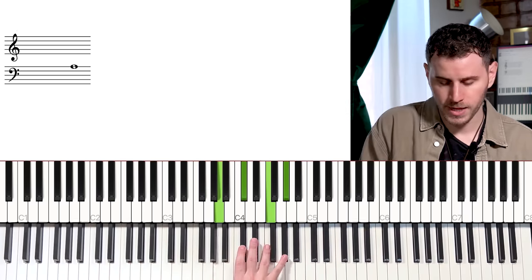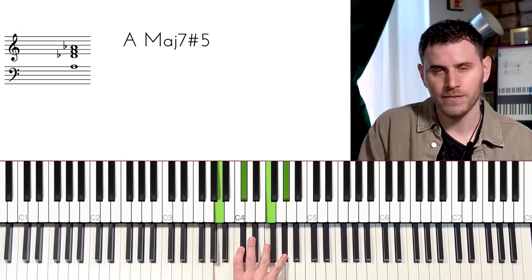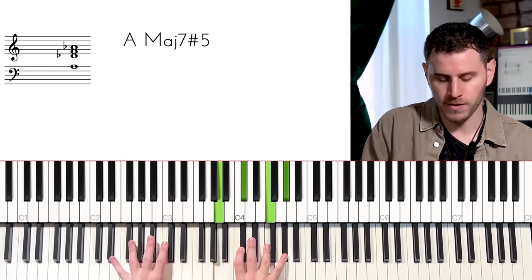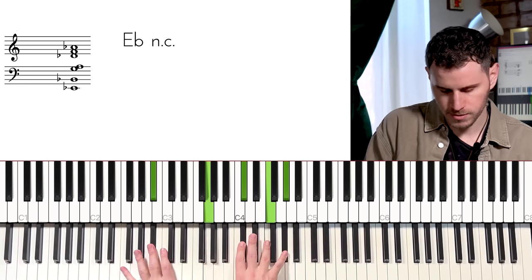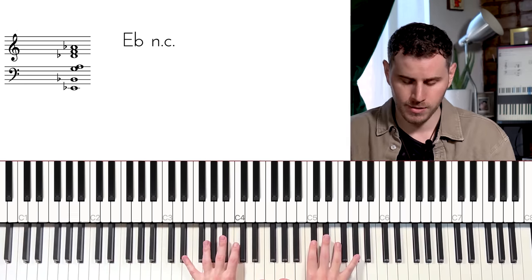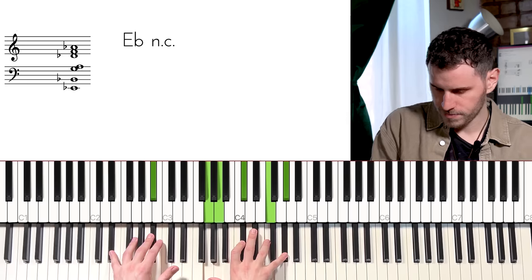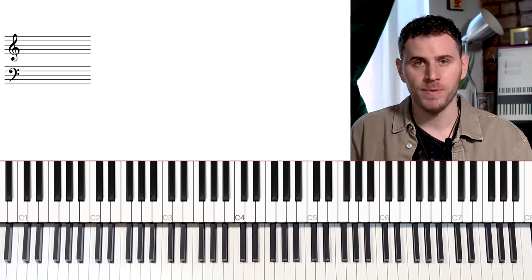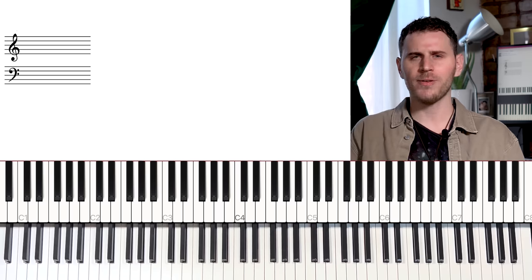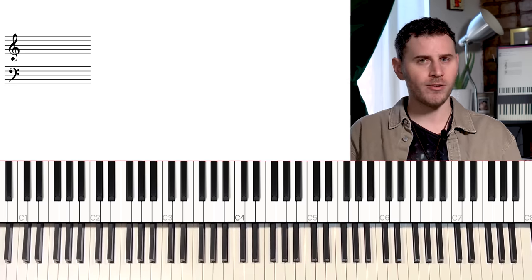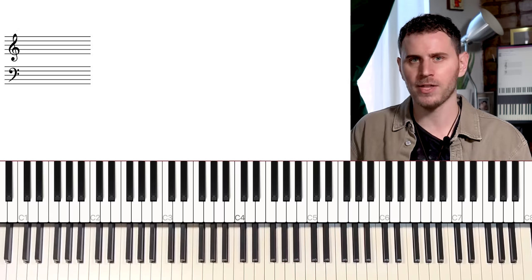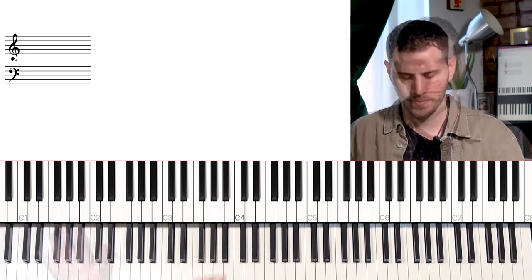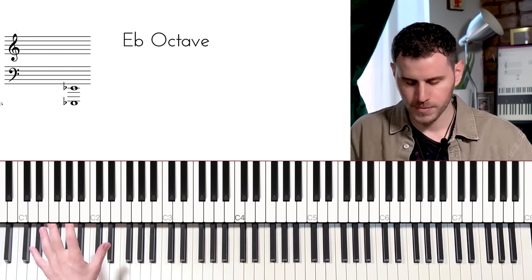So one way you can name this chord would be A major 7 sharp 5 over E flat. And I think that's a pretty good way of conveying it. All right, now make sure to pay attention because this next one actually built on our first chord and is also yet another very essential sound that I'm hearing fairly commonly these days. So let's go back to E flat minor and hear it.